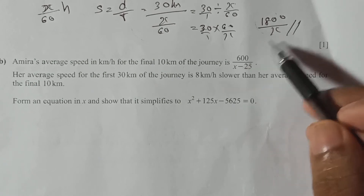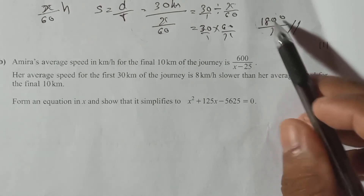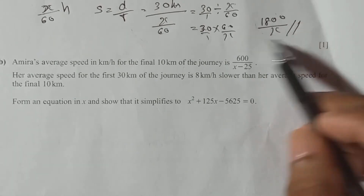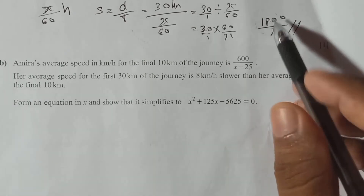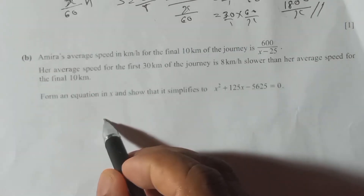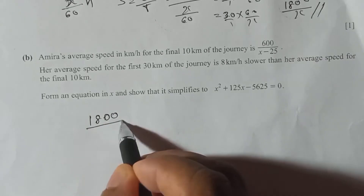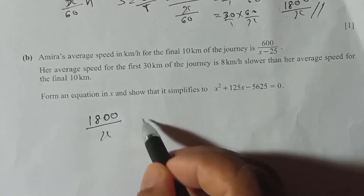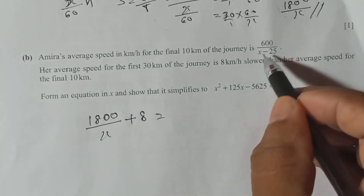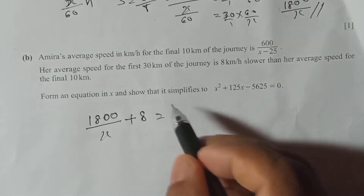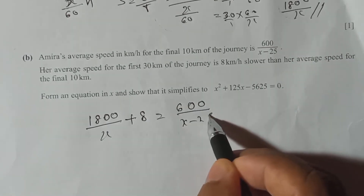Since the first 30 km speed is the lesser one, we add 8 to it. So we get: 1800/x plus 8 equals 600 over x minus 25. This is the equation, because the 30 km speed plus 8 equals the last 10 km speed.